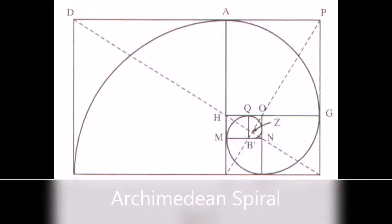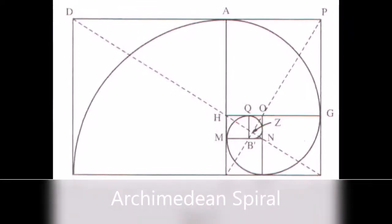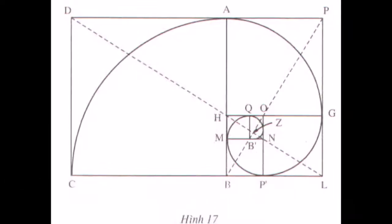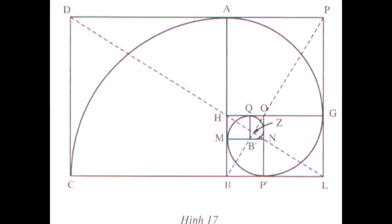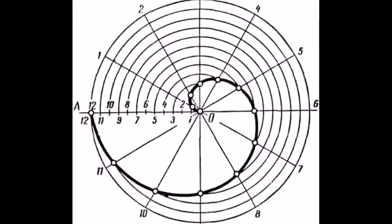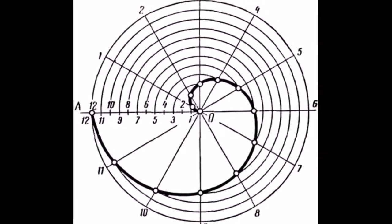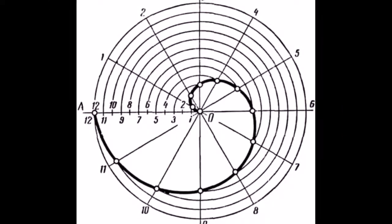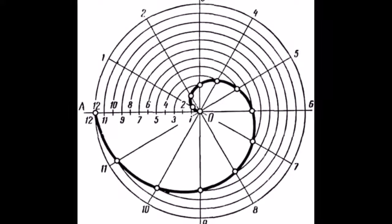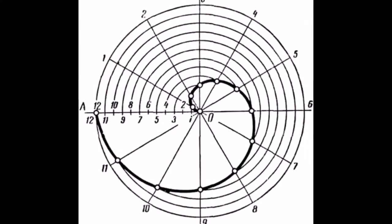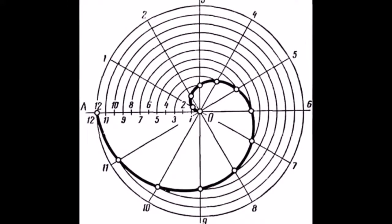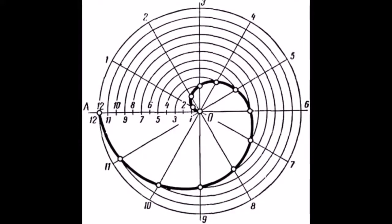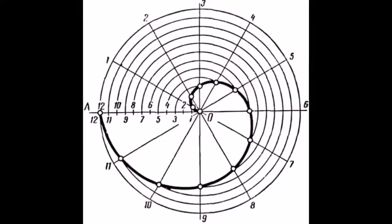Hey guys. Today I will be talking about the procedure for drawing Archimedean spiral. Archimedean spiral is the locus of points corresponding to the locations over time of a point moving away from a fixed point with a constant speed along a line which rotates with constant angular velocity.